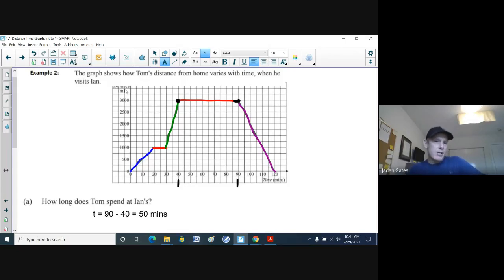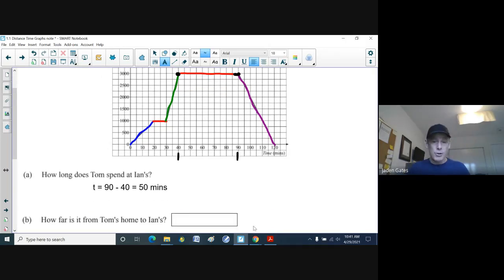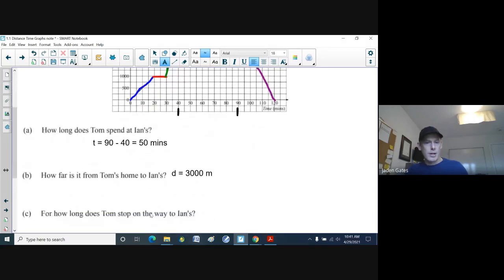Yeah, but because this graph's in meters, I'm going to say 3,000 meters, same thing, right? So yeah, it is definitely three kilometers. Or because the graph is in meters. And as we looked at earlier today, there's a thousand meters in a kilometer. And so, yeah, he's 3,000 meters away, or three kilometers.